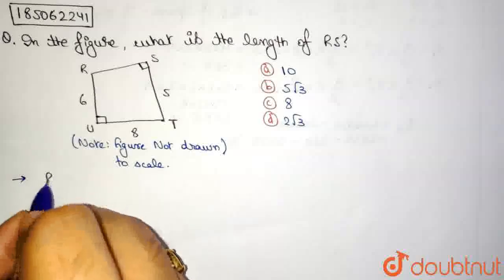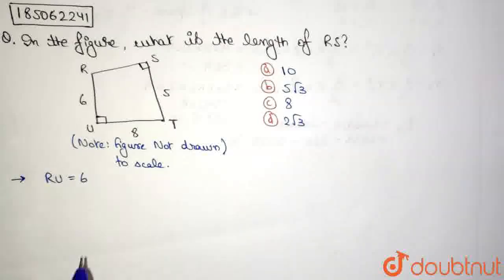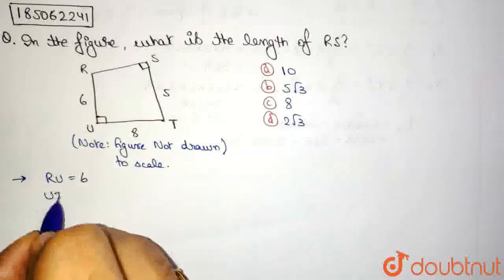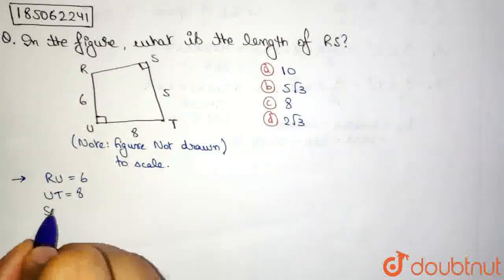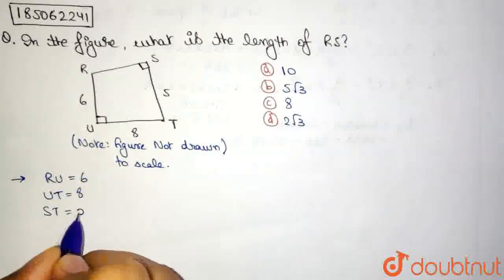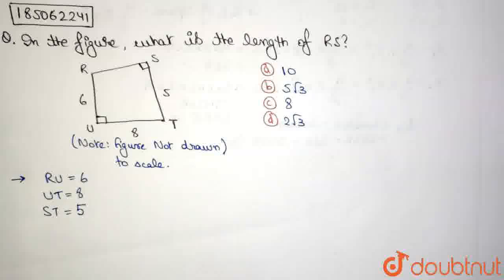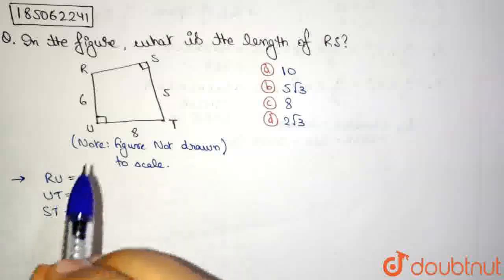So we have RU is equal to 6, we have UT is equal to 8, and we have ST which is equal to 5. Now, we need to find the value of RS.